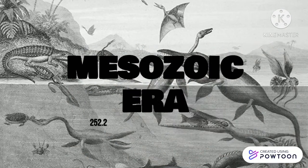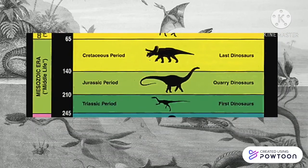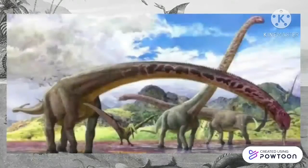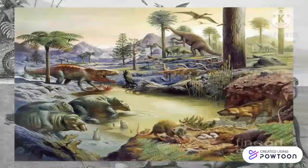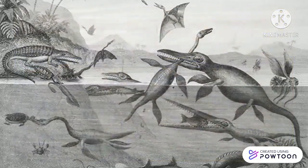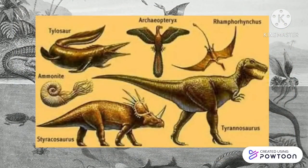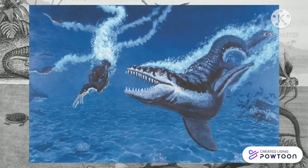The Mesozoic Era began 252.2 million years to 66 million years ago, the second of Earth's three major geologic eras of Phanerozoic time. Its name is derived from the Greek term for Middle Life. The major divisions of the Mesozoic era, from oldest to youngest, are the Triassic period, the Jurassic period, and the Cretaceous period. The ancestors of major plant and animal groups that exist today first appeared during the Mesozoic, but this era is best known as the time of the dinosaurs.